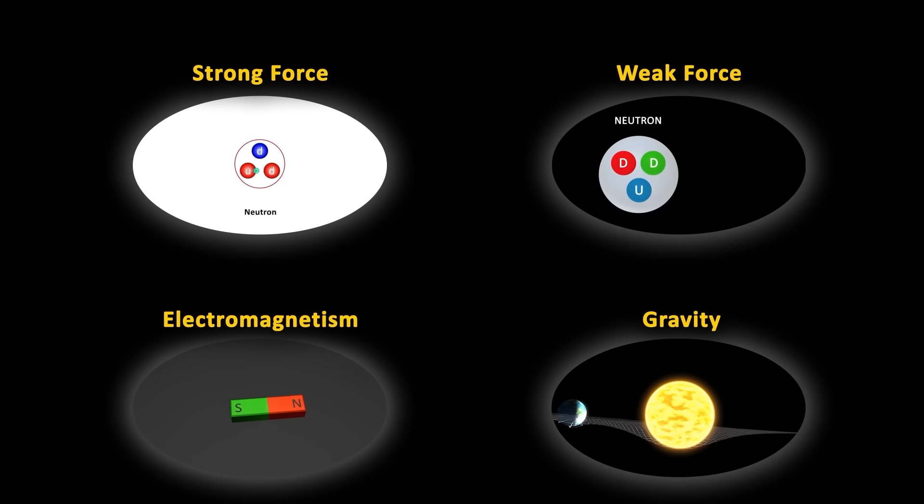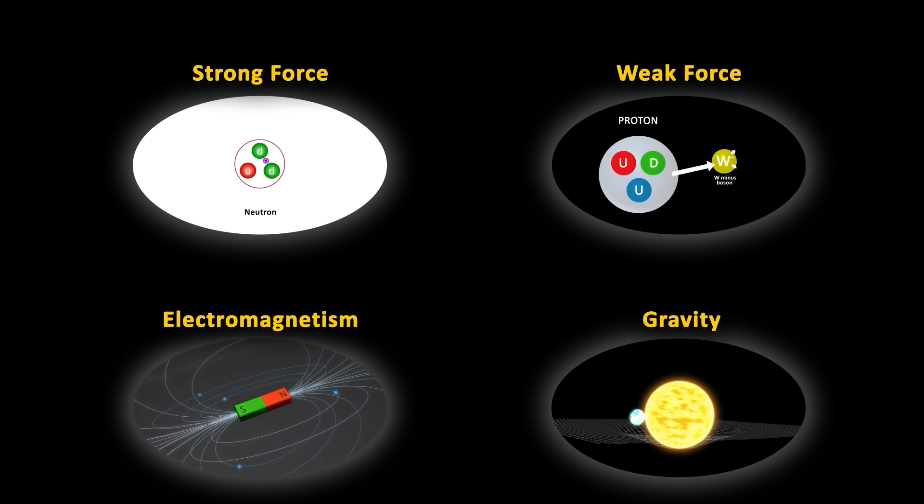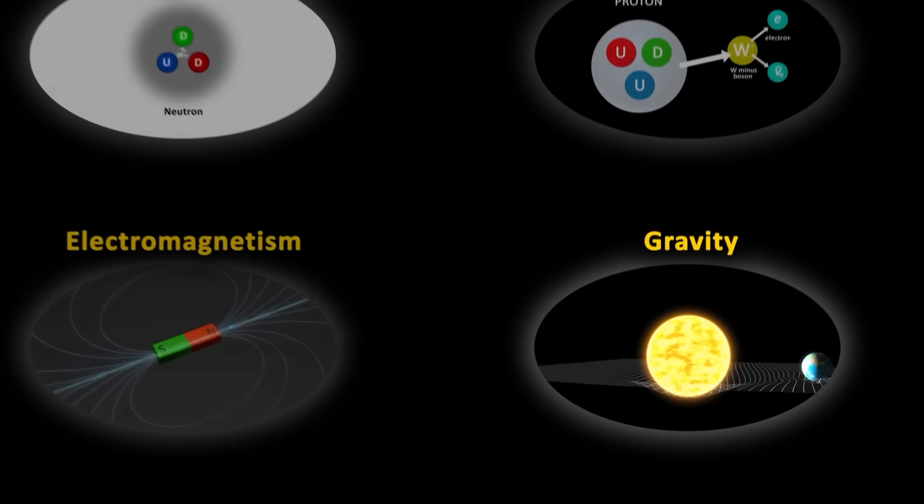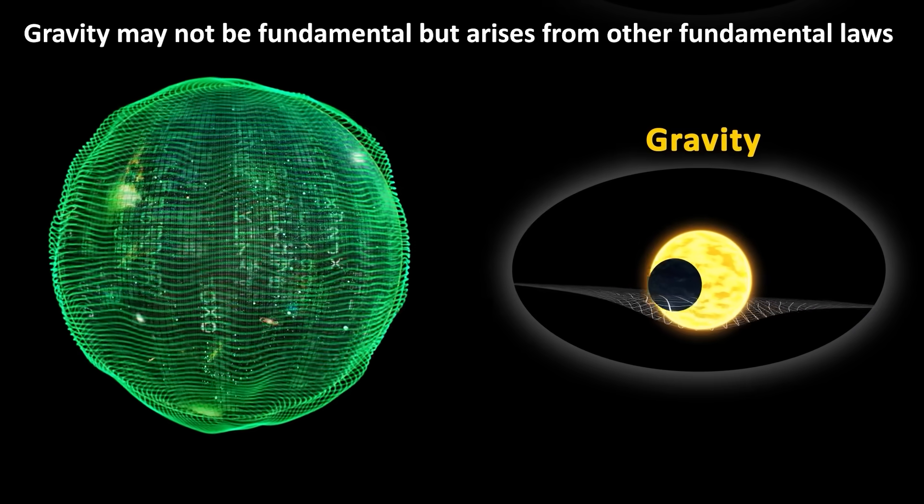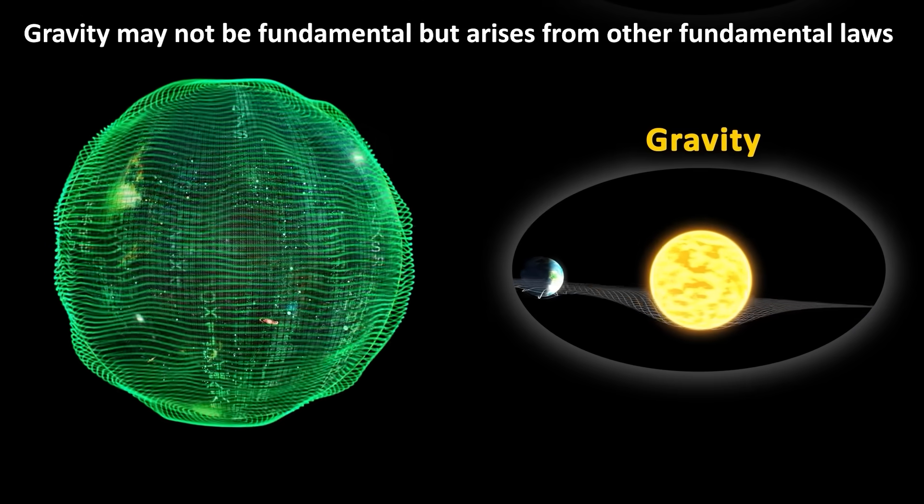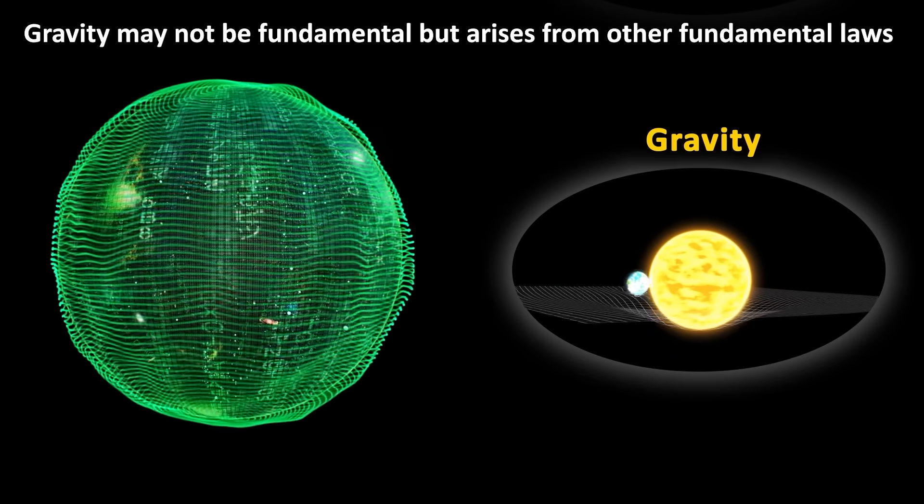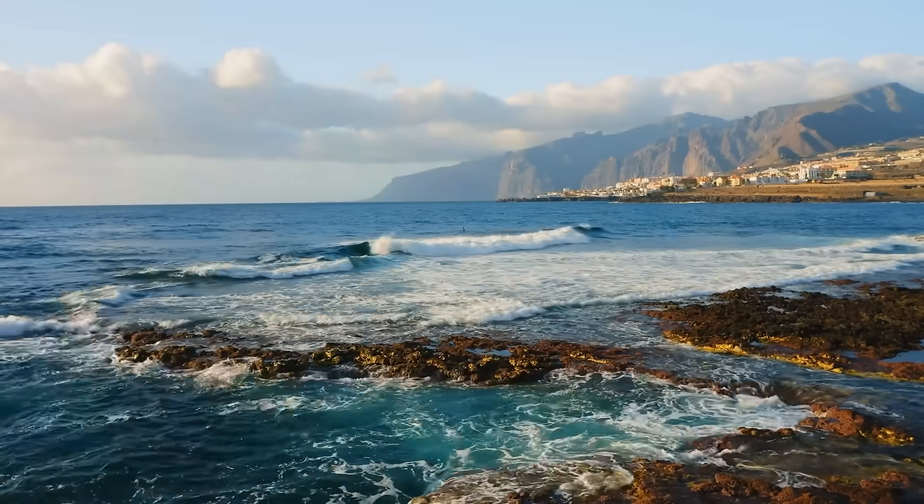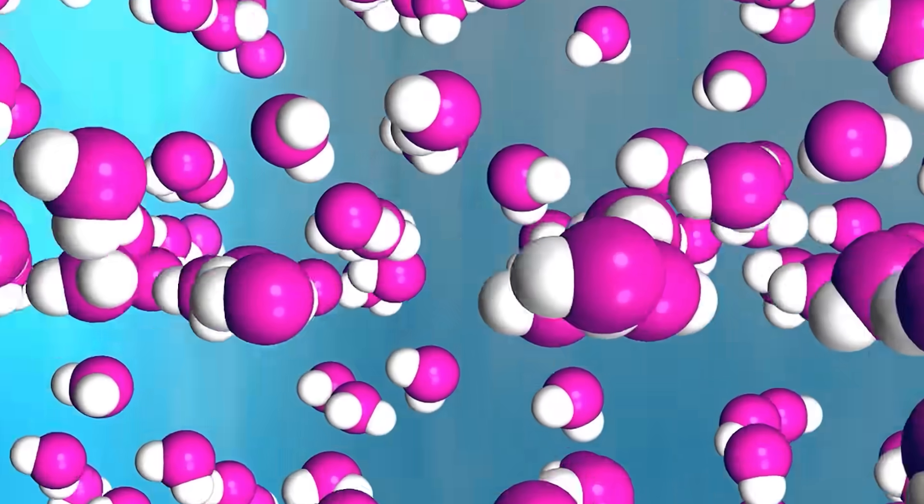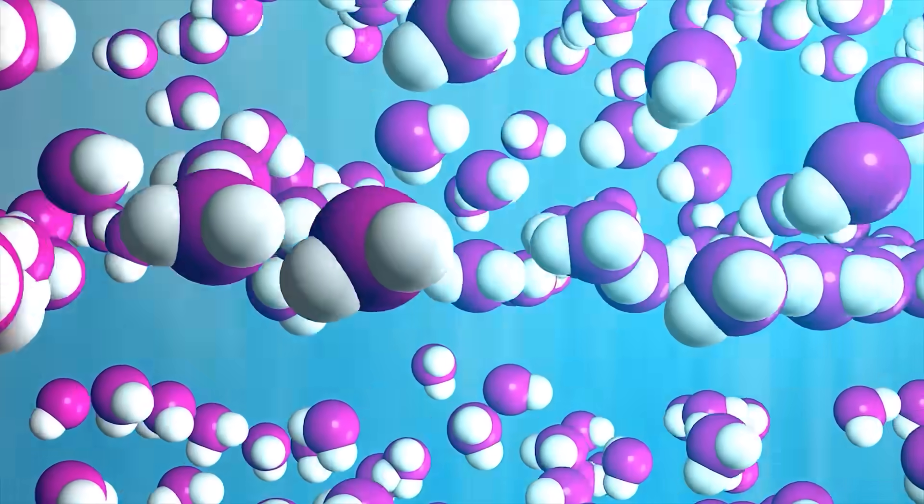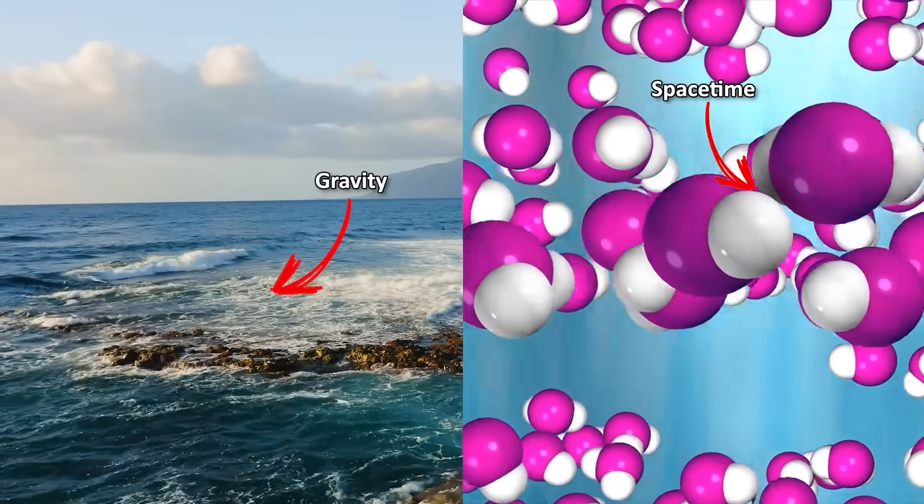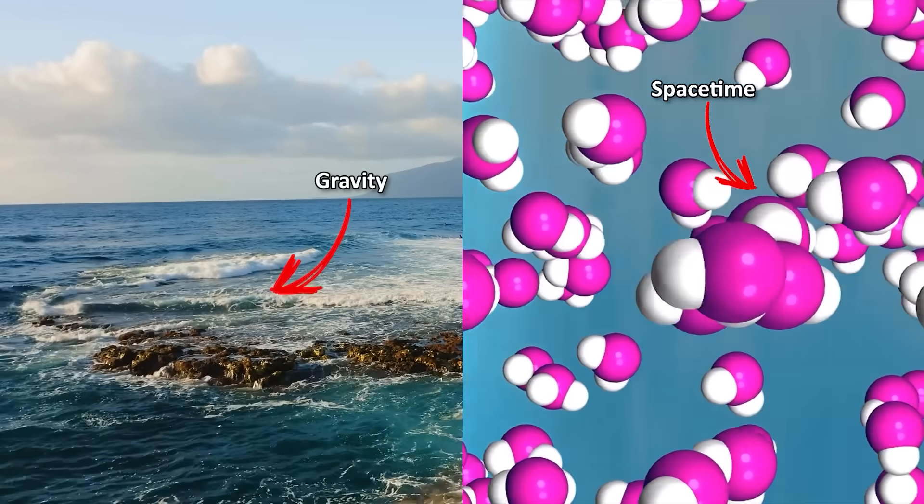In physics classes, we always learn that there are four fundamental forces, the strong force, weak force, electromagnetism, and gravity. But the ADS CFT duality implies that gravity might belong in a different category. It could be a macroscopic phenomenon that isn't fundamental in itself, but arises from deeper laws. To use an analogy, just as waves on the ocean are not fundamental, they result from many water molecules moving under rules of fluid dynamics. Gravity could be the wave and spacetime the fluid in which the wave forms.